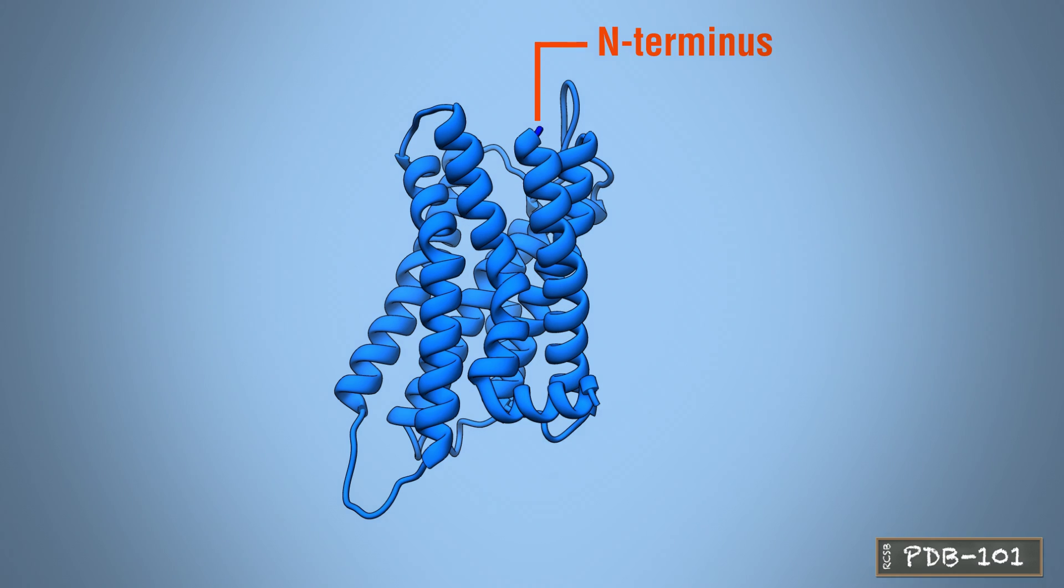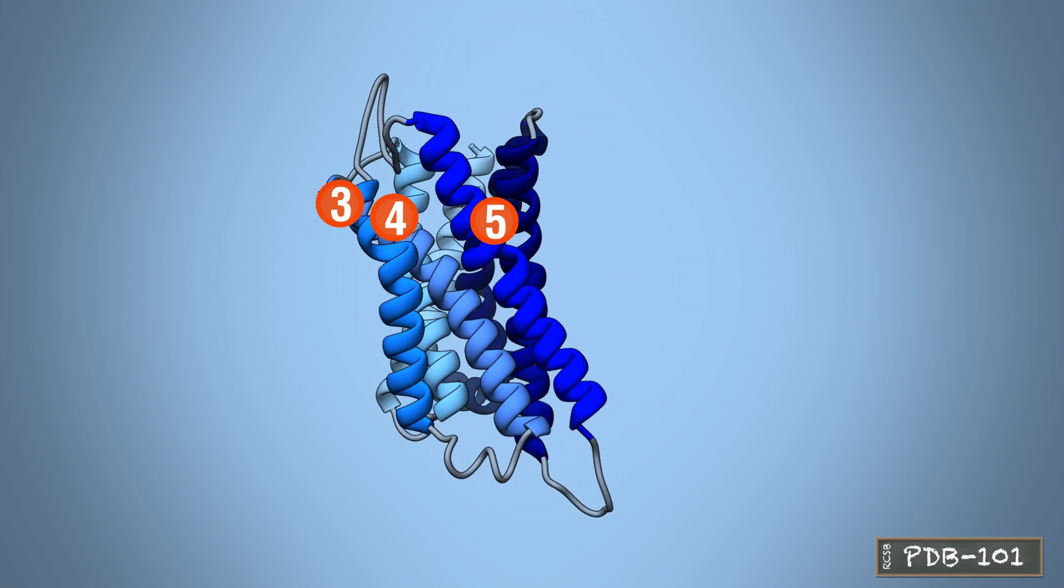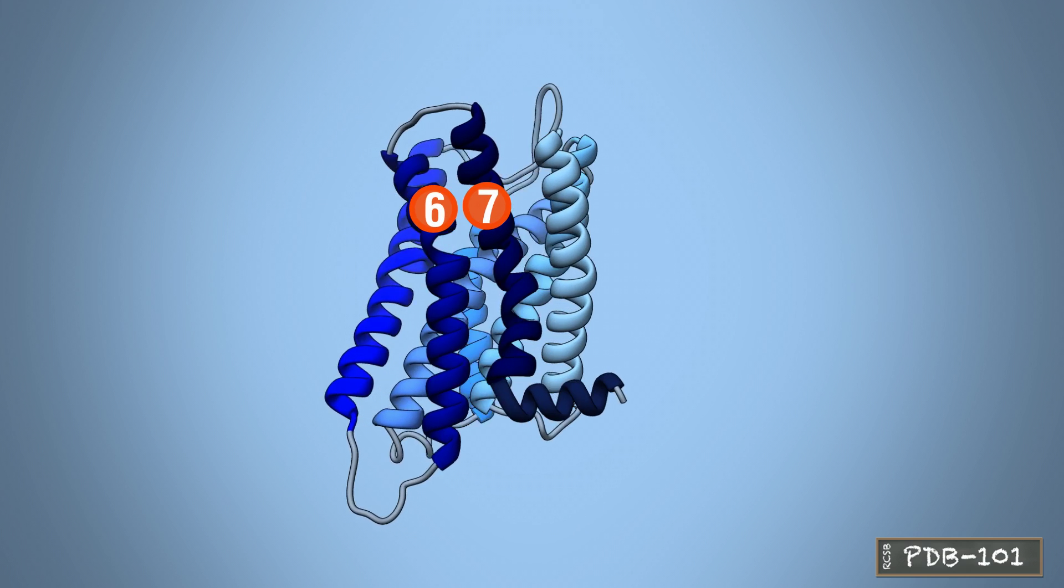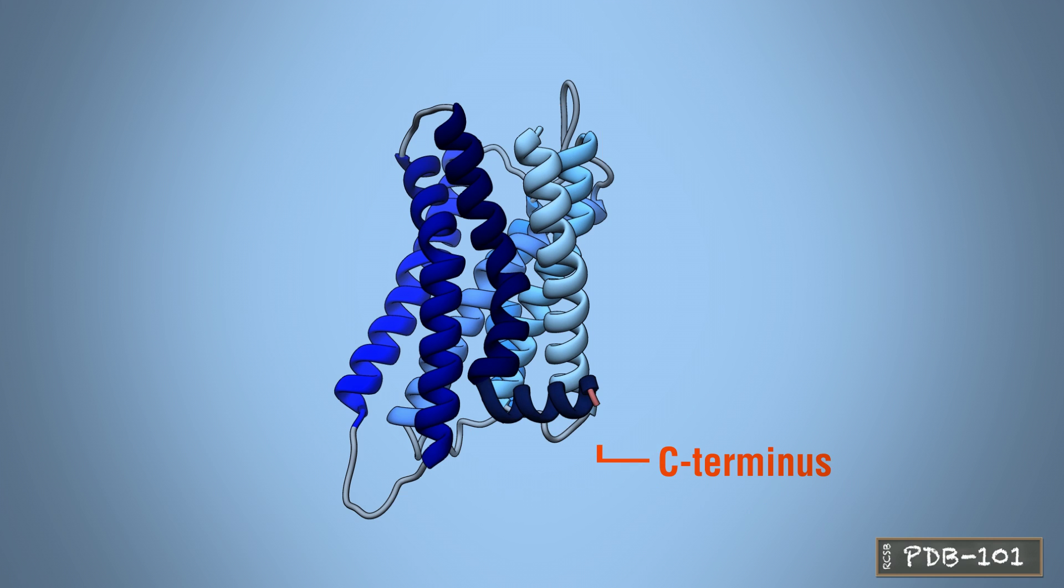With the extracellular N-terminus, the protein chain folds to form a bundle of seven transmembrane alpha helices, connected by three intracellular and three extracellular loops, with the C-terminus reaching inside the cell.